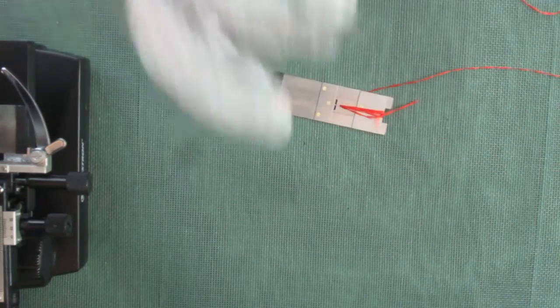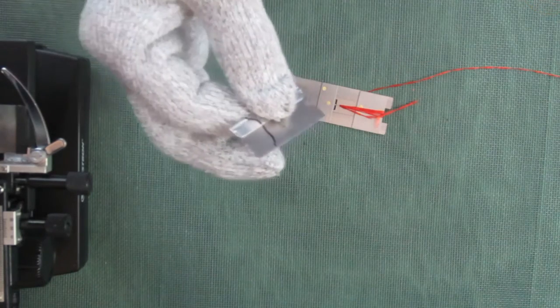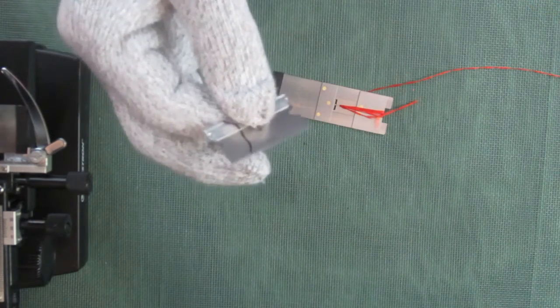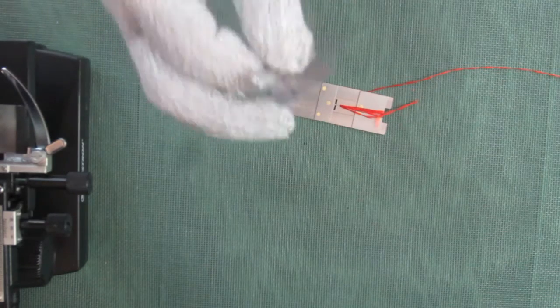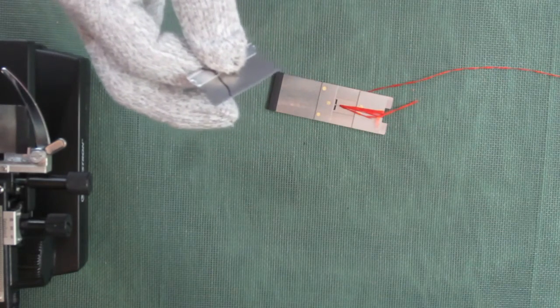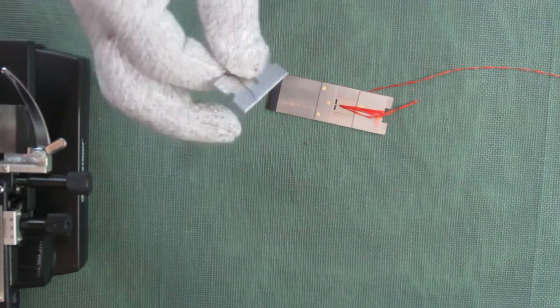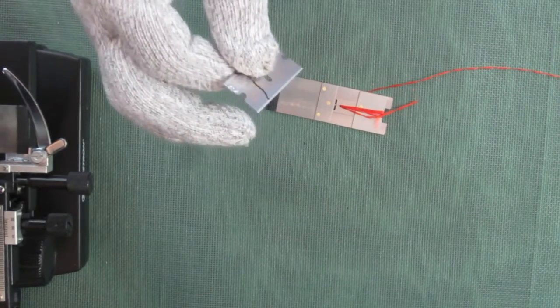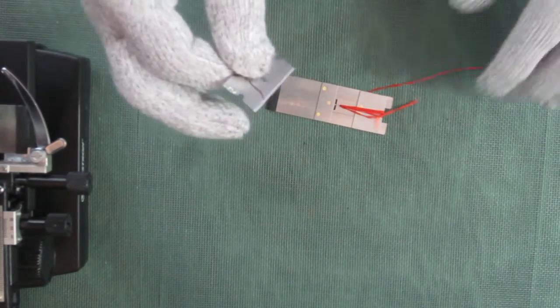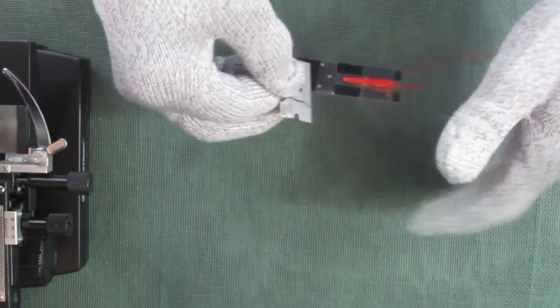You can only use a razor blade for one sample. You get two cuts with one razor blade. One half of the razor blade will take one cut, the other half of the razor blade will take the other cut, and then discard it or put it back in the disposable box. Do not try to get more than one sample per razor blade. You're just going to get aggravated because your cuts are not going to come out right. You need a fresh razor blade each time.